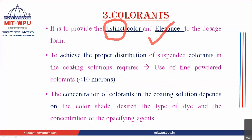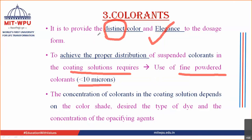To have proper distribution, you suspend these colorants in the coating solution. Hence they are required in a very fine powdered form — usually less than 10 micron size — in order to achieve proper distribution of colorants inside the coating solution. This fine particle size can be achieved by micronization, and these less-than-10-micron coloring agents can then be added into the solvent system.